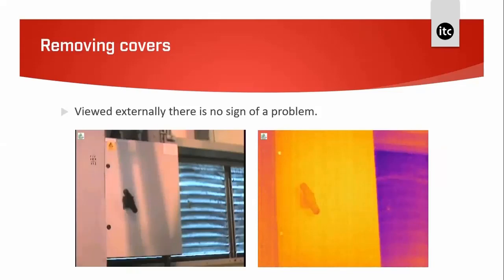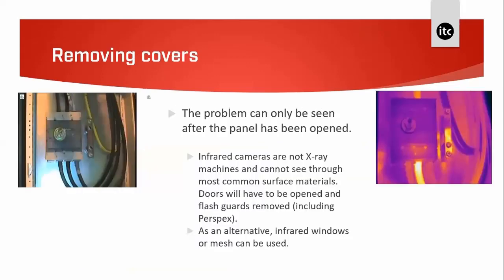What if you're confronted with a room full of panels? Viewing a closed panel, we can't draw much information from the daylight or thermal image — maybe just that the panel door is uniformly a little warmer than the surroundings. The problem can only be seen after the panel has been opened. The doors of electrical panels are opaque solids — it's not possible to truly assess electrical systems without opening them. Even perspex and lexan are thermally opaque to the infrared camera, just like the panel door.